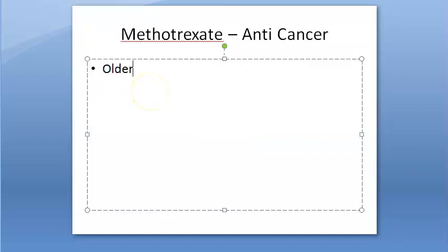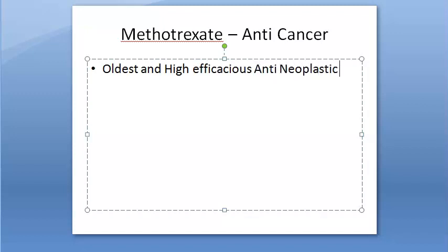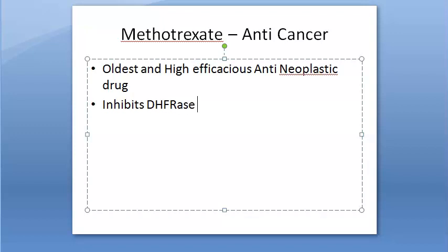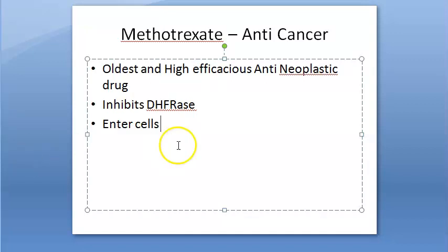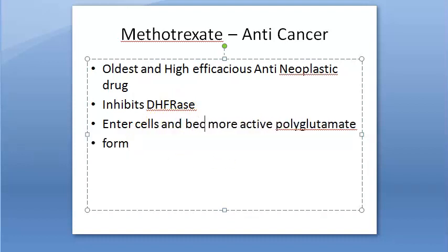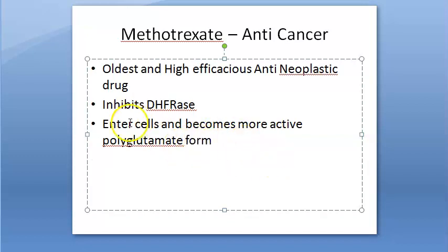Now let's look at methotrexate in the anti-cancer chapter. It is the oldest and highly efficacious anti-neoplastic drug. It inhibits the dihydrofolate reductase enzyme, blocking conversion of dihydrofolic acid into tetrahydrofolic acid. Using the folate carrier, it enters cells and is transformed into a more active polyglutamate form.